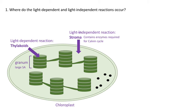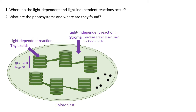Remember that the stroma contains the enzymes for the Calvin cycle, but it also contains DNA and ribosomes, so the chloroplast can manufacture the enzymes required for these reactions when it needs them. The black structures in the bottom corner represent starch granules, so the chloroplast can also store glucose in the form of starch granules.